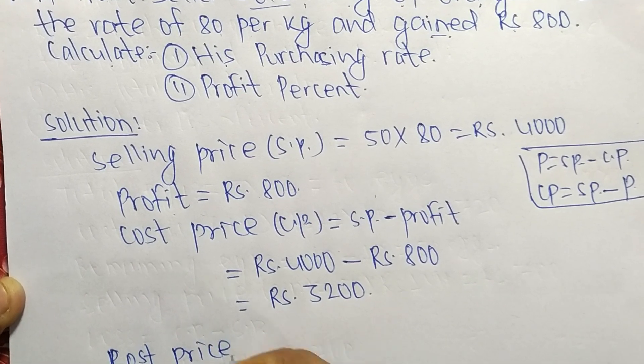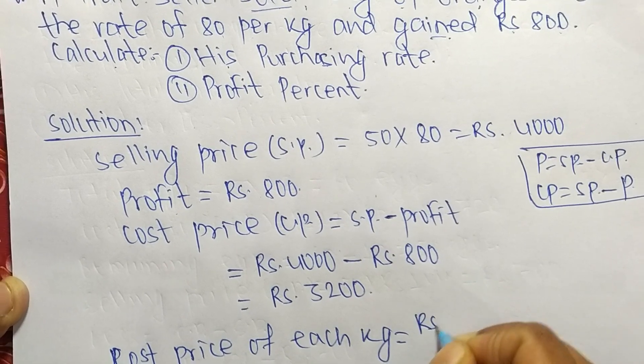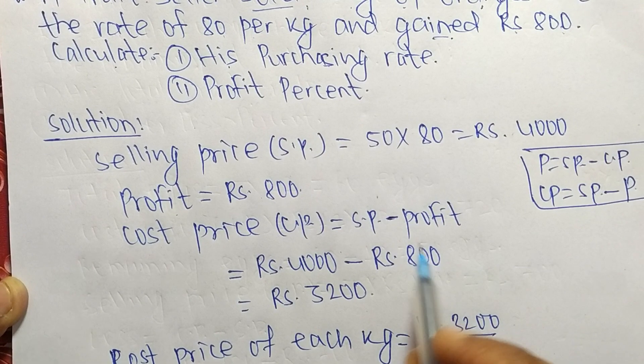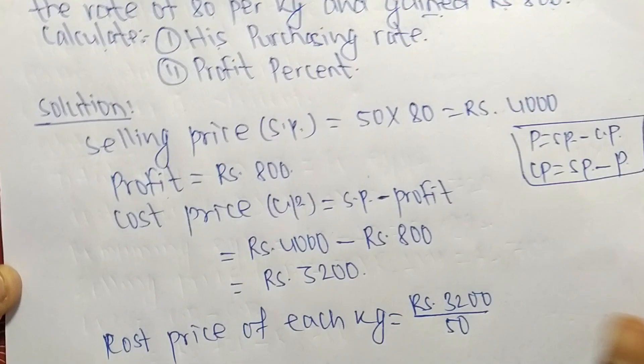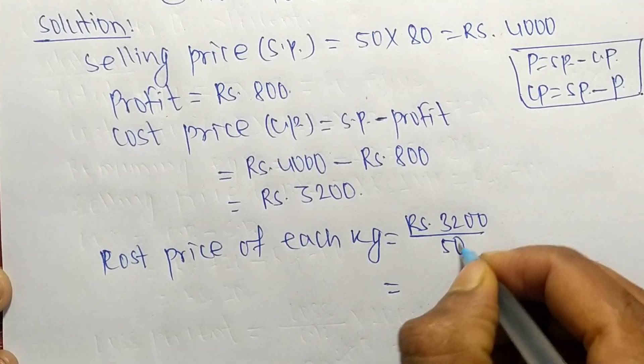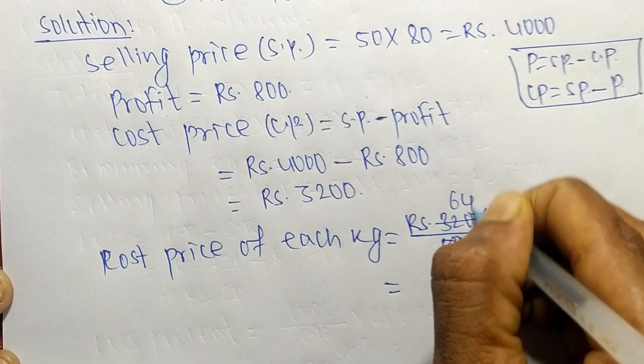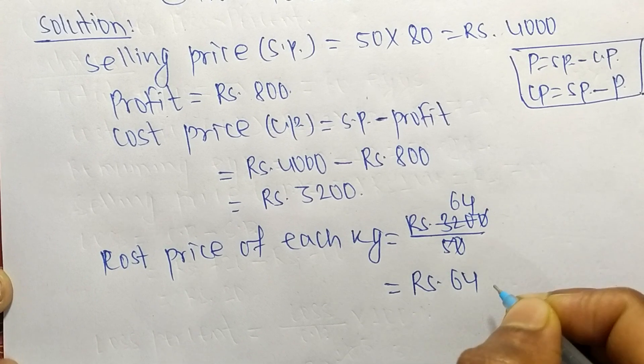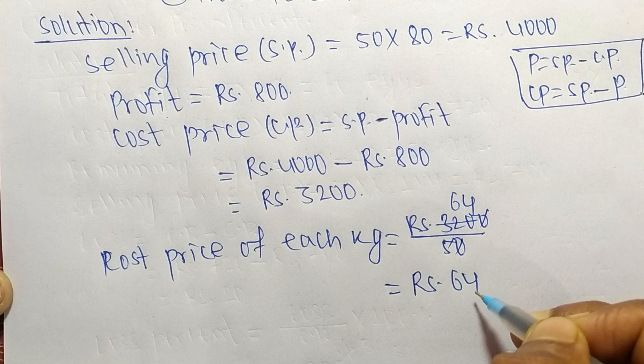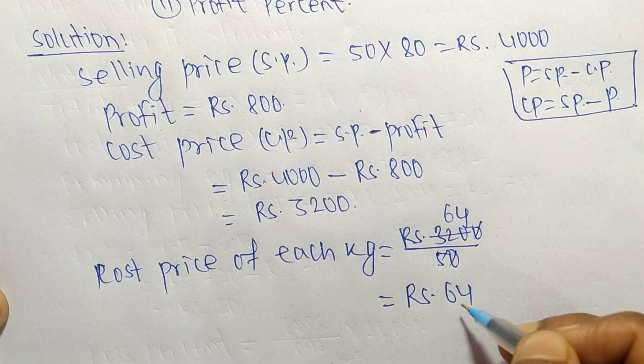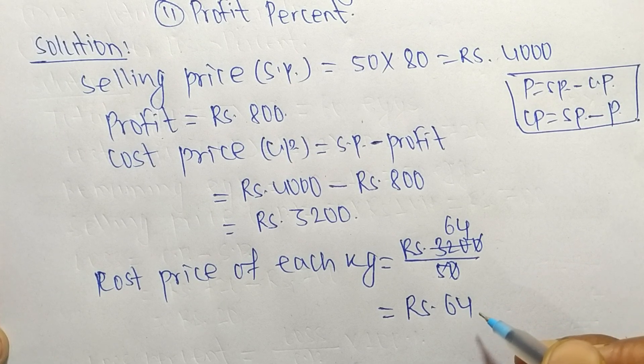The cost price is 3200 and total it is 50 kg, so we divide by 50. So 5 times 6 is 30, so it is equal to Rs. 64. By dividing 3200 by 50 we get 64. So the purchasing rate, the cost price of each kg of orange, is Rs. 64.